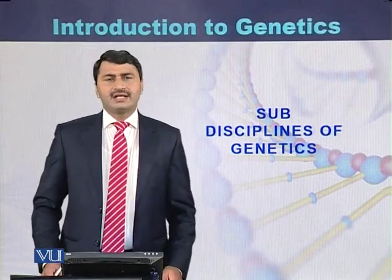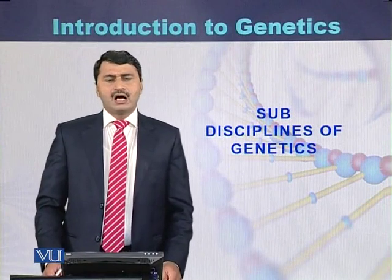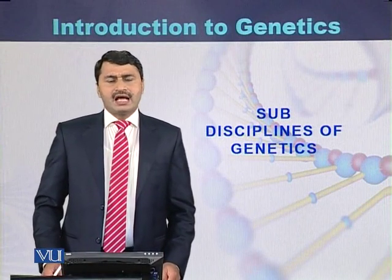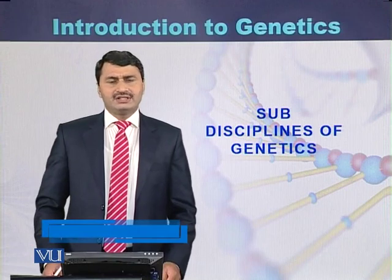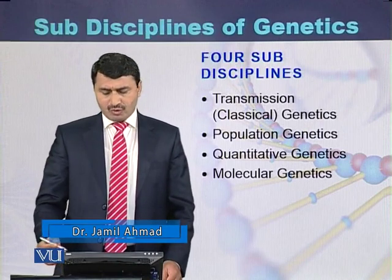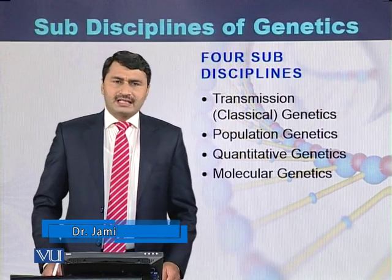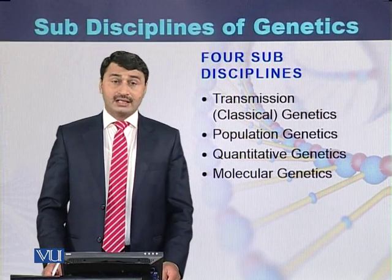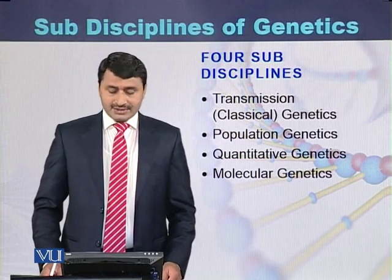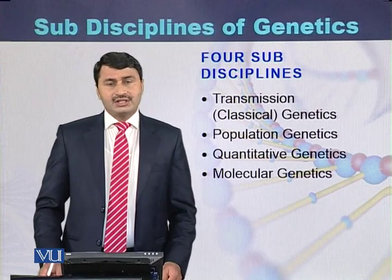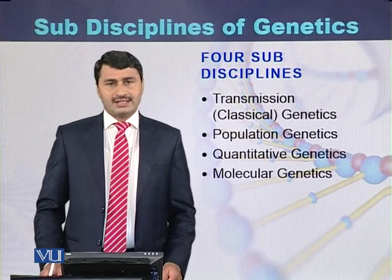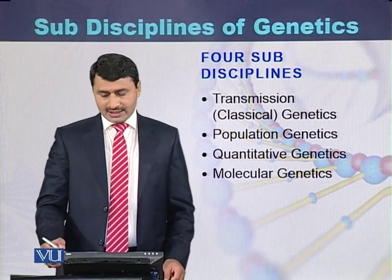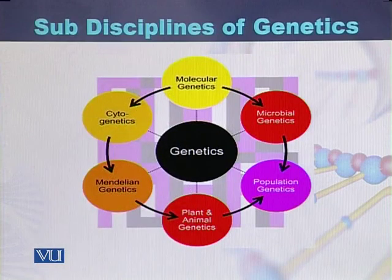Genetics can be classified into four sub-disciplines, although some geneticists and researchers classify genetics into many sub-disciplines. Most geneticists classify genetics into four sub-disciplines: transmission or classical genetics, population genetics, quantitative genetics, and molecular genetics. These are the four sub-disciplines of genetics, and they are also the major ones.